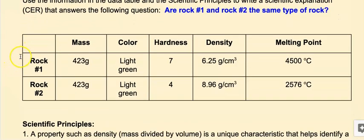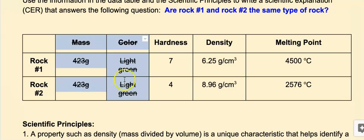The information I'm looking for would be things considered physical properties. Mass and color are not physical properties — they're used to help figure out what some rocks are, but they're not that useful overall. So I'm going to strike through them so I can still see them but realize they're not the best information.